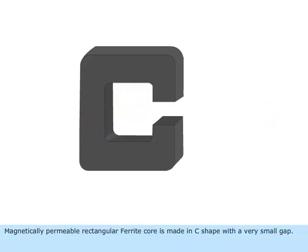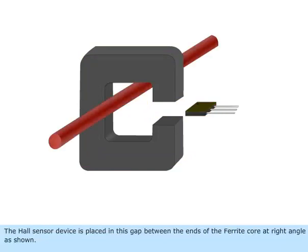Magnetically permeable rectangular ferrite core is made in C-shape with a very small gap. The Hall Sensor device is placed in this gap between the ends of the ferrite core at right angle as shown.